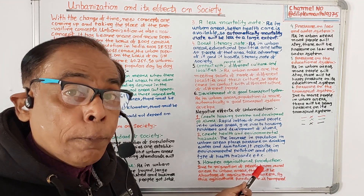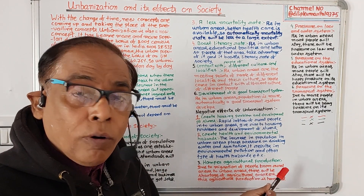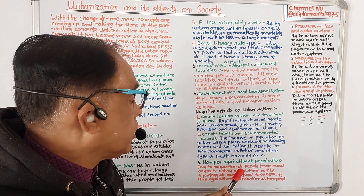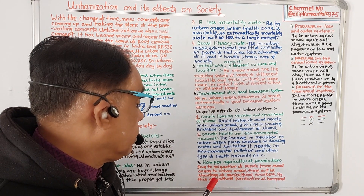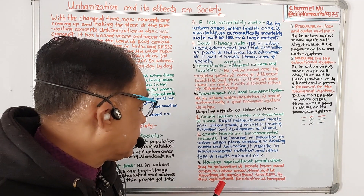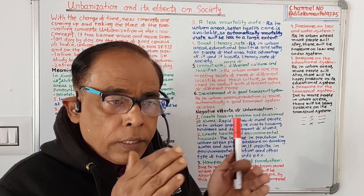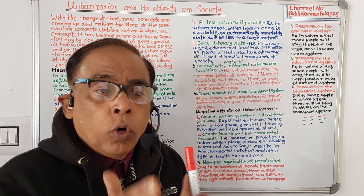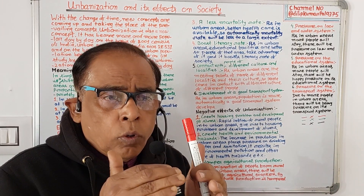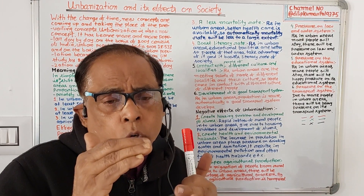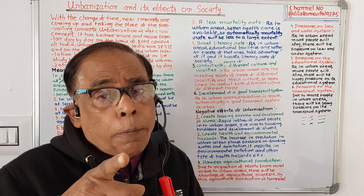Number three: urbanization will hamper agricultural production. Due to migration of people from rural area to urban area, there will be a shortage of agricultural workers in rural areas, and by this agricultural production is hampered.